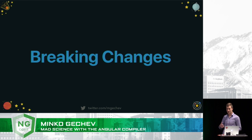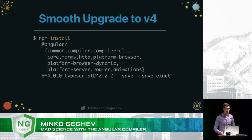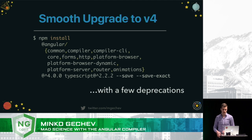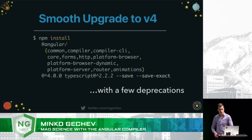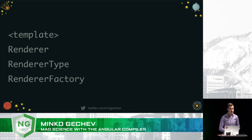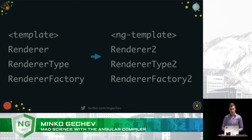Now let's talk about something not that fun — breaking changes. Although the Angular team did an amazing job in making sure that we almost have no breaking changes between version 2 and version 4, there are still some deprecations. We can migrate our application from version 2 to version 4 just by updating our dependencies. But these deprecations are something that we need to take care of before version 5. For instance, the template is now called `ng-template`, we have `Renderer` which is `Renderer2`, and so on.